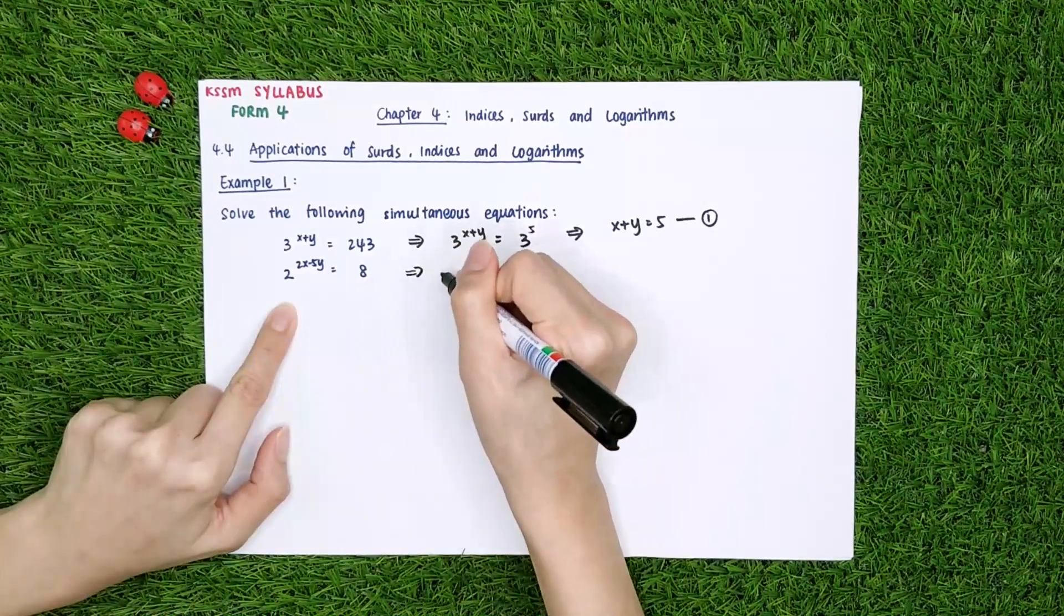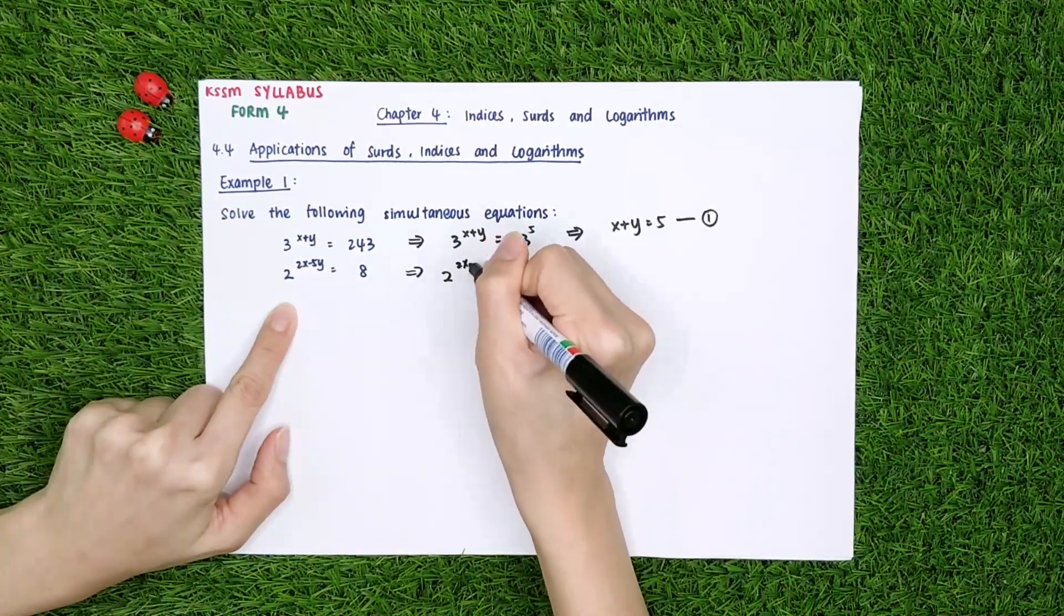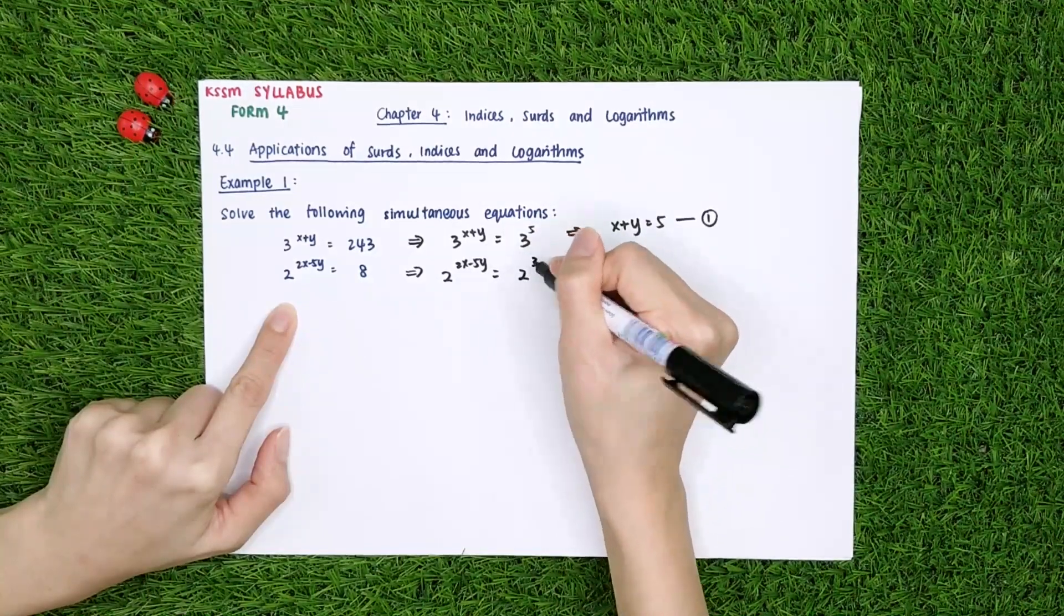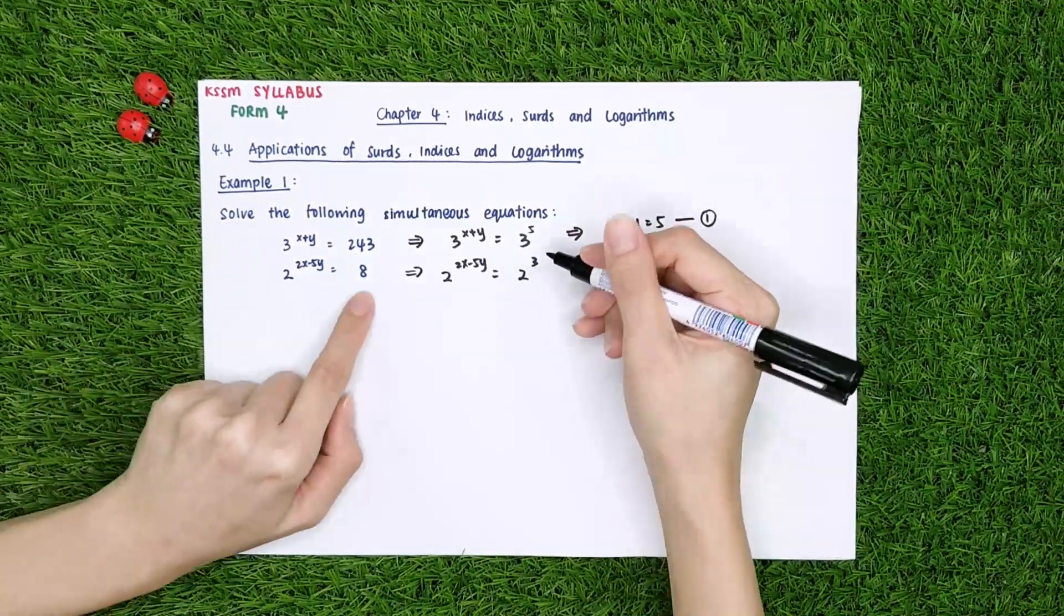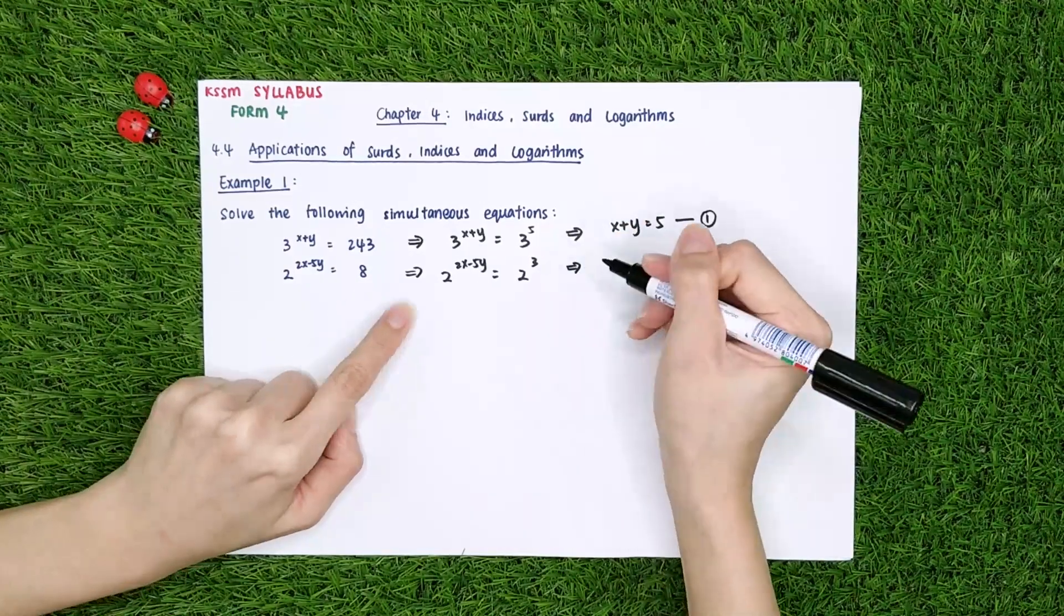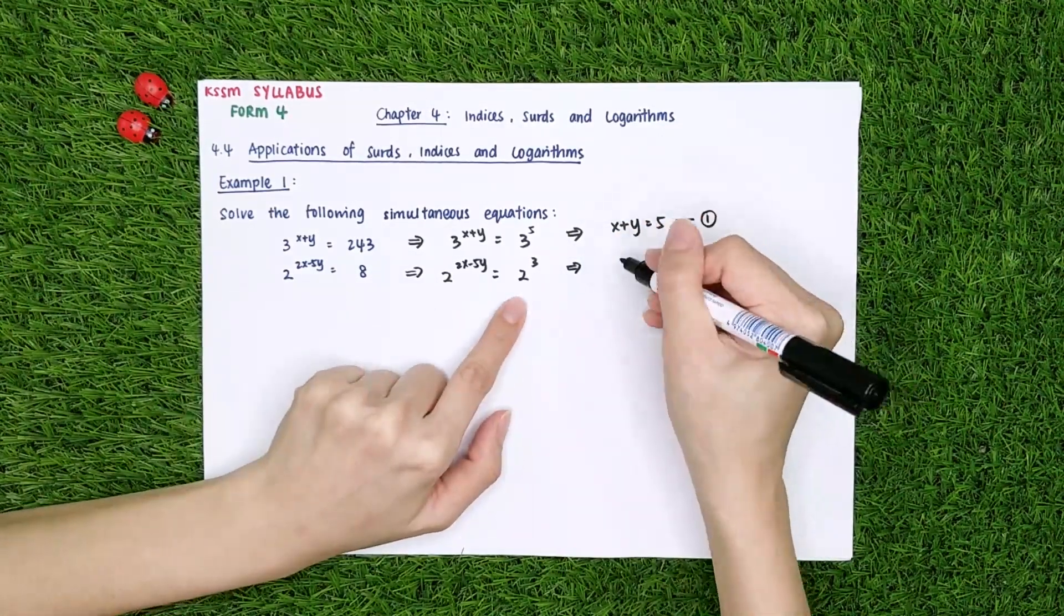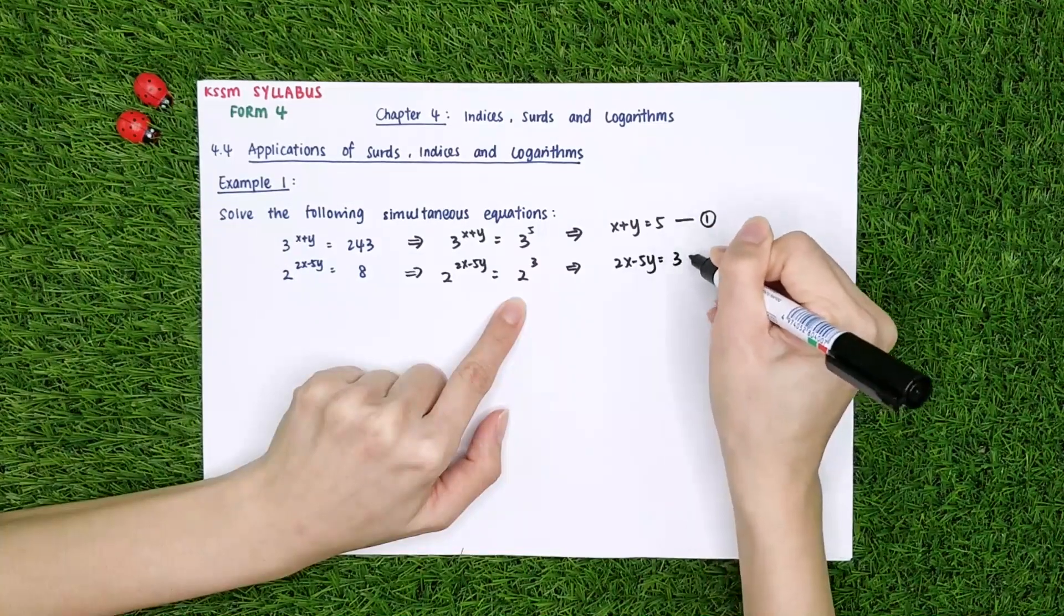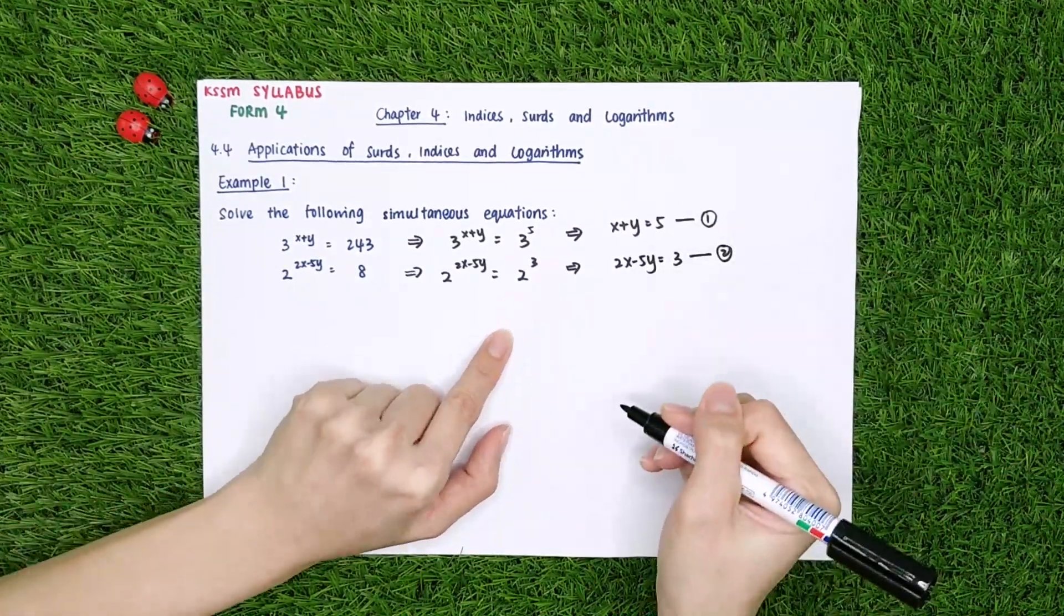This one, I can change it become 2 power of 2x minus 5y is equal to 2 power of 3. 2 power of 3 is equal to 8. So I can say that since the base is the same, I can say that 2x minus 5y is equal to 3. This is the second equation.